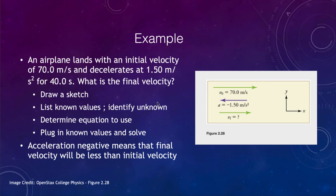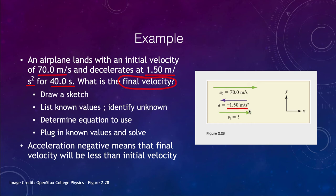We're looking at an airplane landing with an initial velocity of 70 meters per second, decelerating at 1.5 meters per second squared for 40 seconds. How fast will it be going at that time? As always, we start with a sketch. The velocity is 70 meters per second in the positive x direction. Because we are decelerating, the acceleration is opposite to the direction of velocity — meaning it points to the left, making it negative. We then need to determine the final velocity: is it enough to slow it down and stop it, or does it begin moving in the opposite direction?